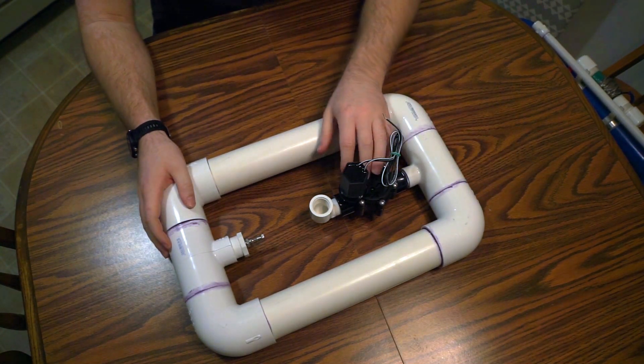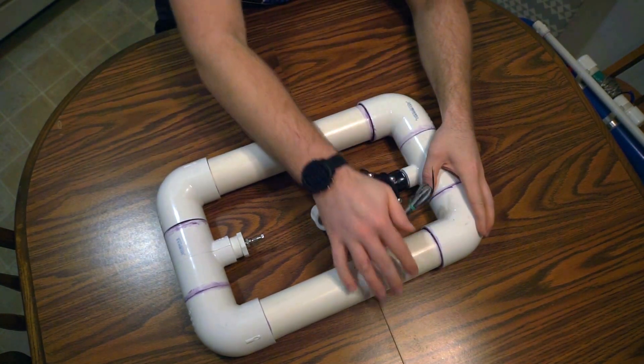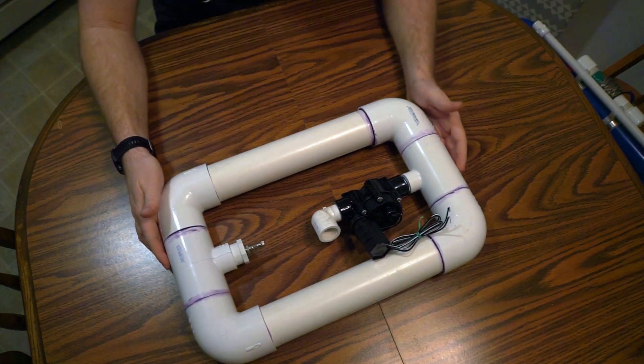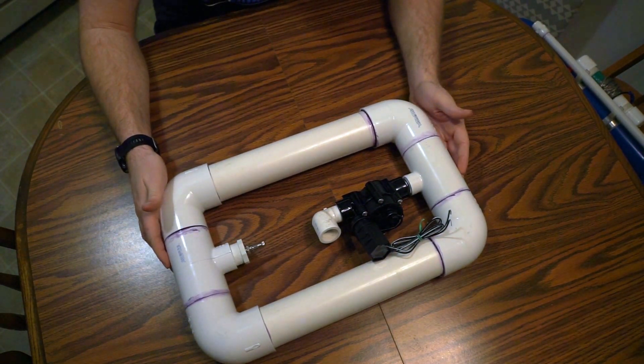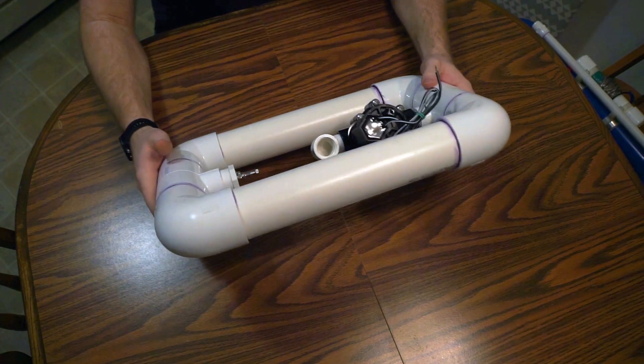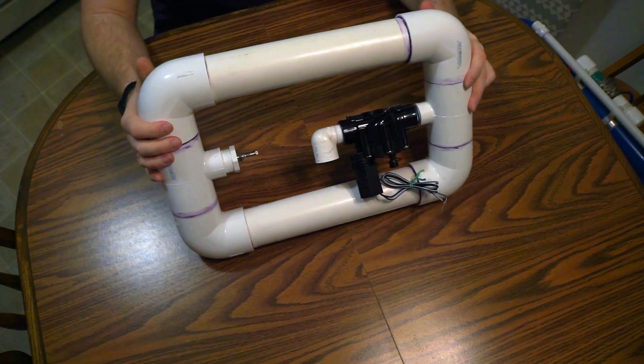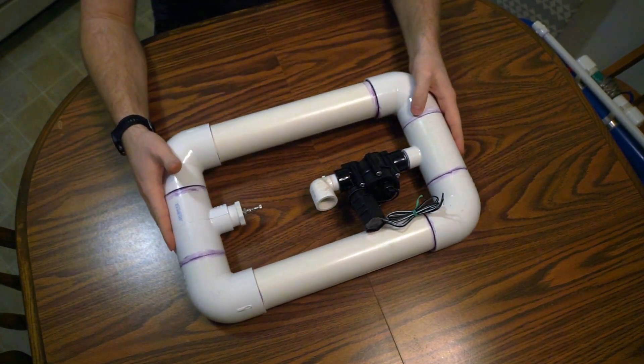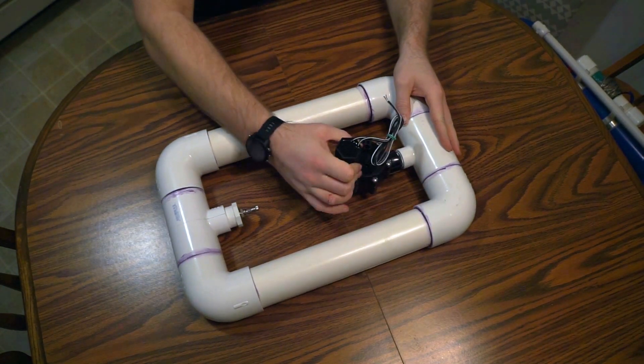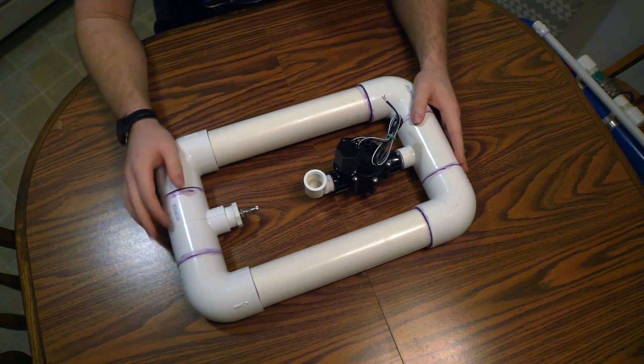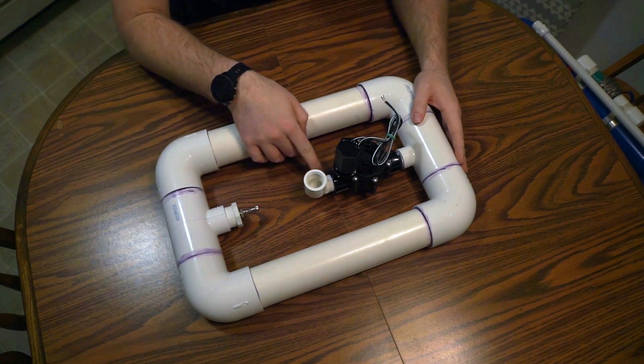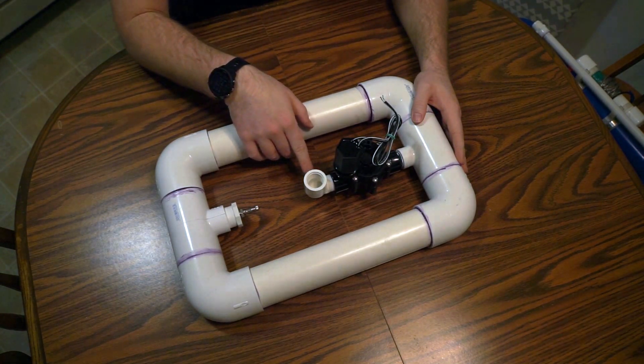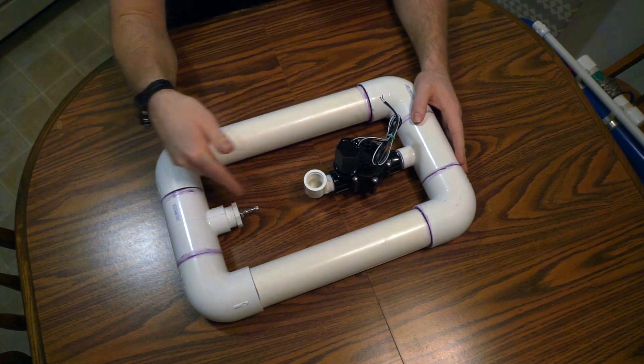The only thing that really sticks up is the solenoid here, and you can bend that out of the way if you're shipping it. Having it as a rectangle makes it a lot sturdier overall. The other thing was that this street elbow comes straight out of the sprinkler valve, so there's not a further lever.